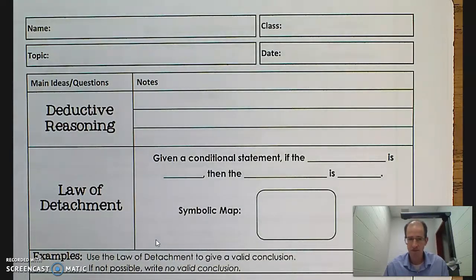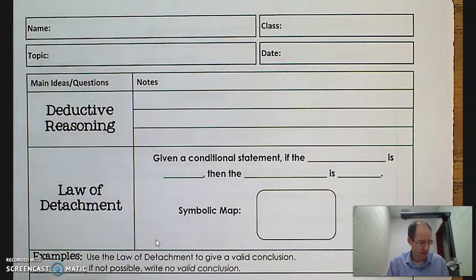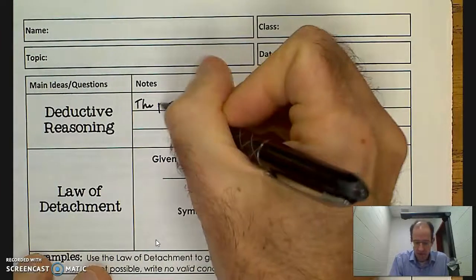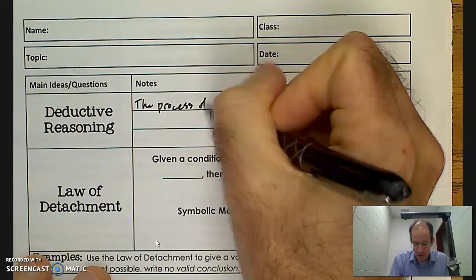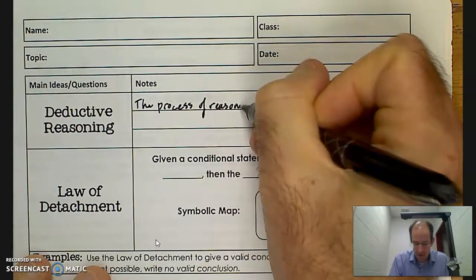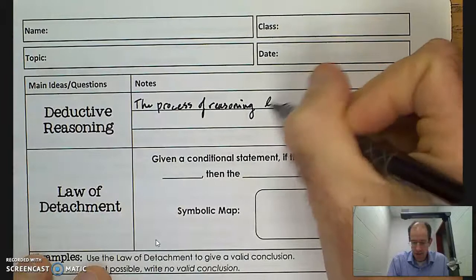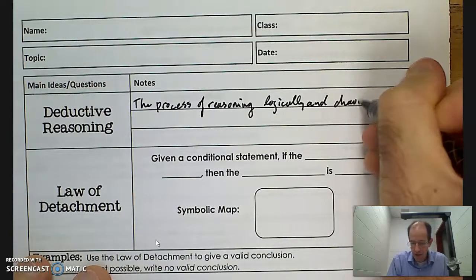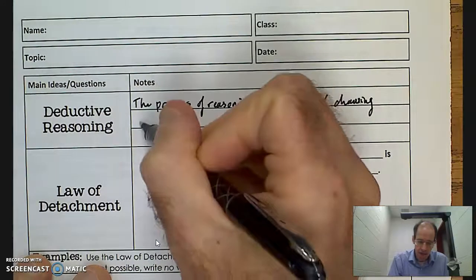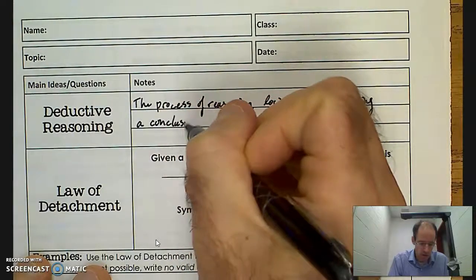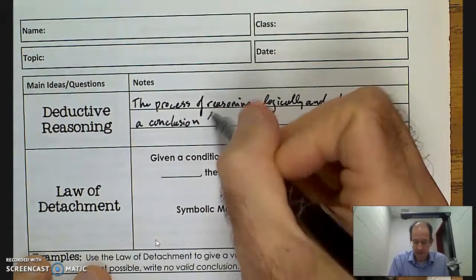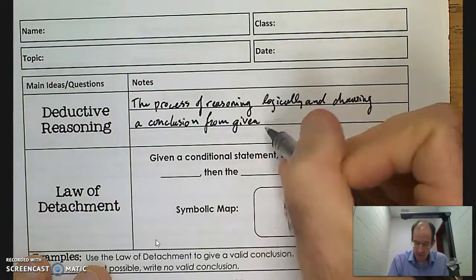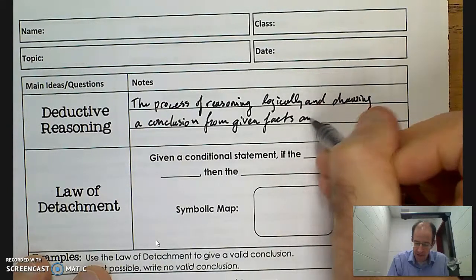Now we're going to talk about deductive reasoning, which is reasoning from the general to the specific — using what I know to solve a specific problem. Deductive reasoning is the process of reasoning logically and drawing a conclusion from given facts and statements.